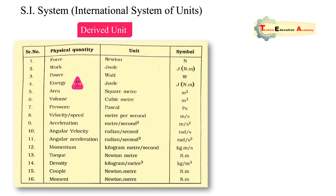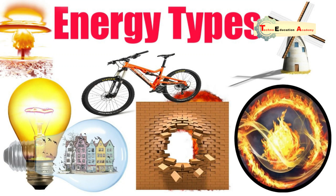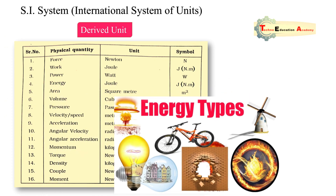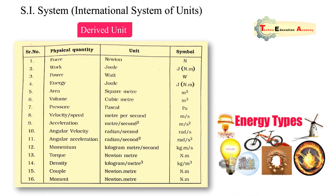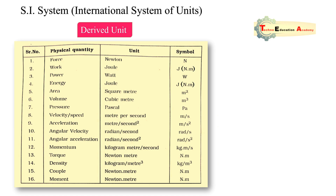Energy means the capacity of doing work, and its unit is joule. There are various forms of energy: kinetic energy, nuclear energy, thermal energy, and mechanical energy — a separate video on different forms of energy is available in the thermodynamics lecture series. The next quantity is area, whose unit is square meter, and volume, whose unit is cubic meter. These are geometrical quantities.